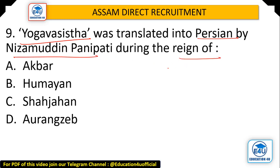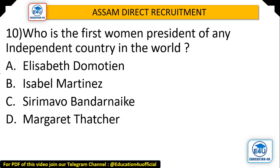Question: Yoga Vashishti was translated into Persian by Nizamuddin Panipati during the reign of which ruler? The answer is Akbar. Nizamuddin Panipati translated the Yoga Vashishti into Persian during the reign of Akbar.